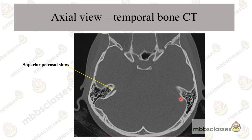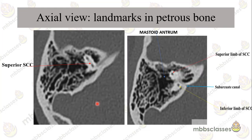As we move further down, this is the superior petrous sinus. This superior petrous sinus drains blood from the cavernous sinus — the pituitary is located in this area, with the cavernous sinus lying laterally. The superior petrous sinus drains the cavernous sinus posteriorly and ultimately drains into the transverse sinus.